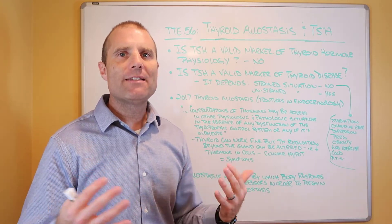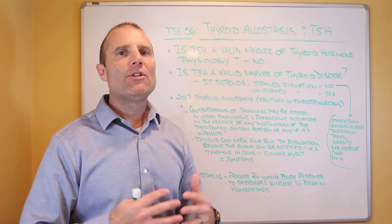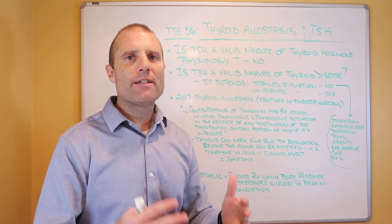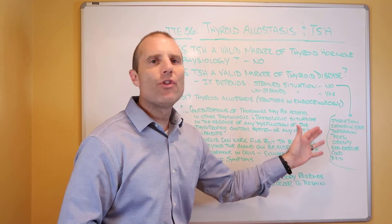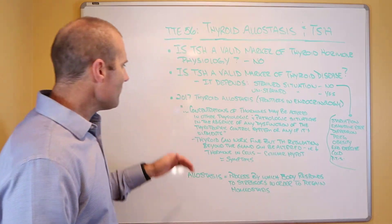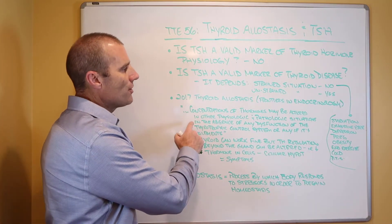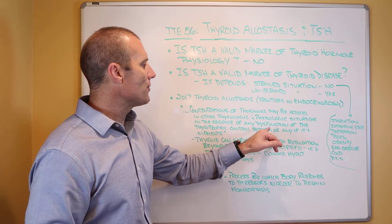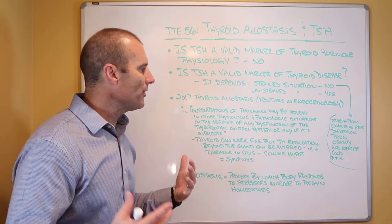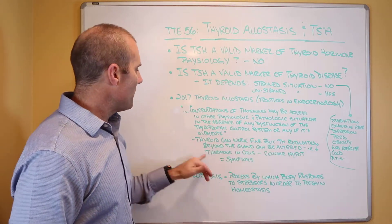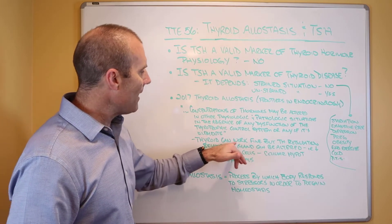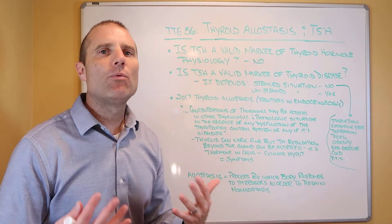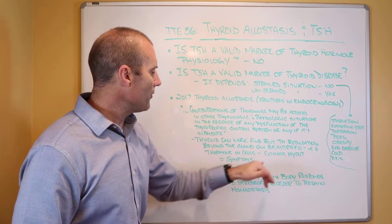These are the types of people who may have TSH elevations or normal TSH and be told there's nothing really wrong with them — and yet they have low thyroid hormone and symptoms. They don't have glandular disease and don't necessarily need thyroid hormone support. You have to get to the root things that are triggering the change in physiology. The paper states that concentrations of thyroid hormones may be altered in physiologic and pathologic situations in the absence of any dysfunction of the thyrotropic control system, the thyroid gland, or any of its elements — meaning the thyroid gland can work fine, but thyroid hormone regulation beyond the gland can be altered, which we call cellular hypothyroidism. This is what drives symptoms.